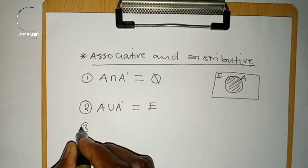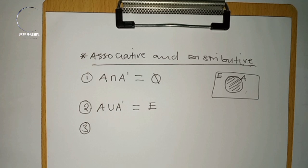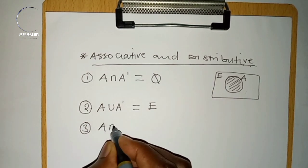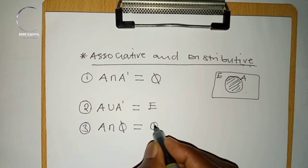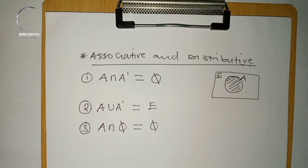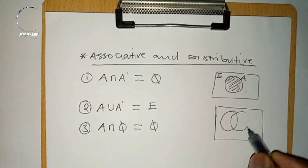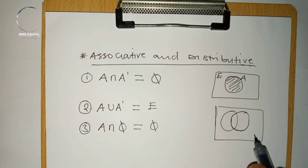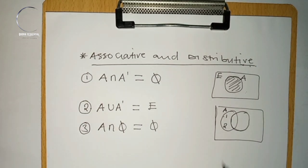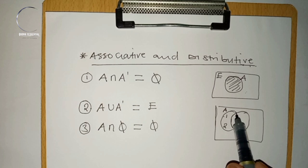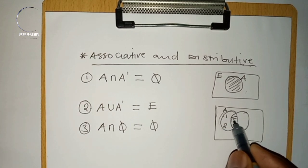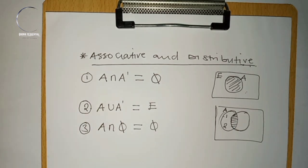The third rule states that a given set intersected with an empty set results in an empty set, because there is no point where these two sets intersect. On a Venn diagram, set A contains elements like 1 and 2, while the other set is empty, so A ∩ ∅ = ∅.